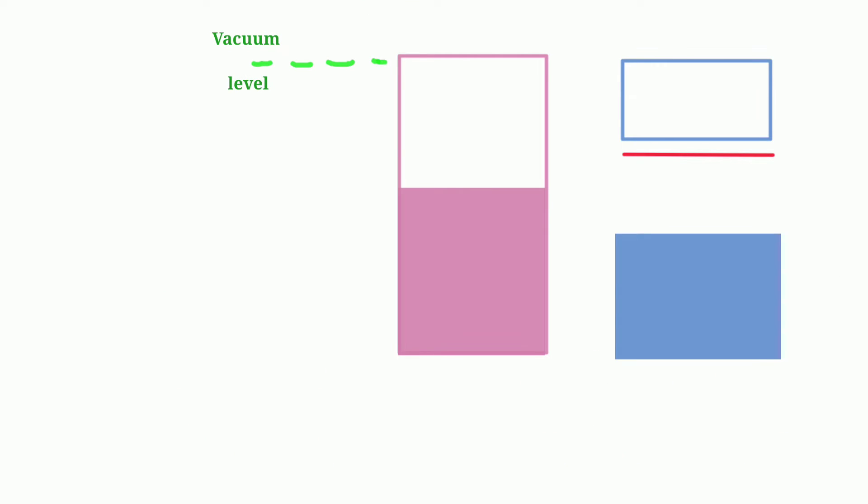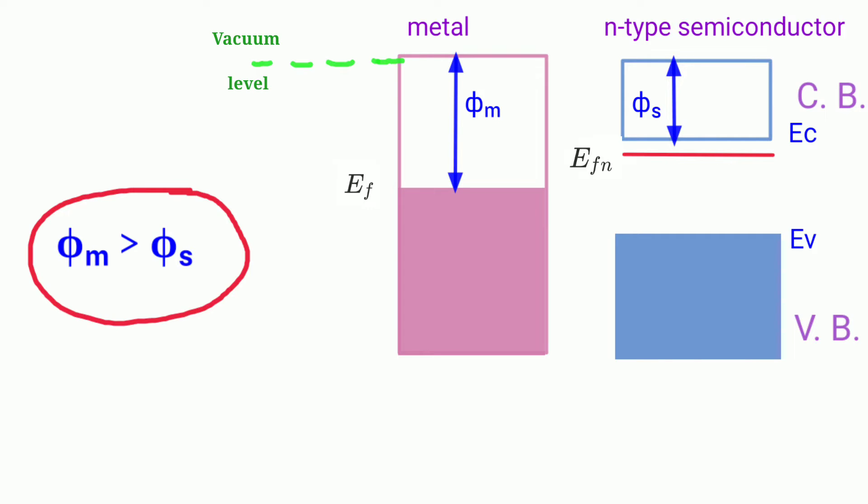Let us consider a junction formed between a metal and a semiconductor as shown in this diagram. Here EF is the Fermi level of the metal and EFN is the Fermi level of the semiconductor, which is an N-type semiconductor. The conduction band and valence band are also shown in this diagram. EC represents the bottom of the conduction band whereas EV represents the top of the valence band. Clearly the Fermi level of the semiconductor is higher than that of the metal, meaning its work function is smaller than that of the metal. The diagram shows the state of affairs before the contact is formed.